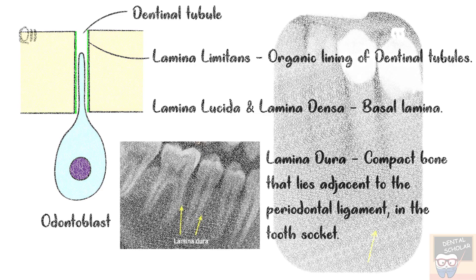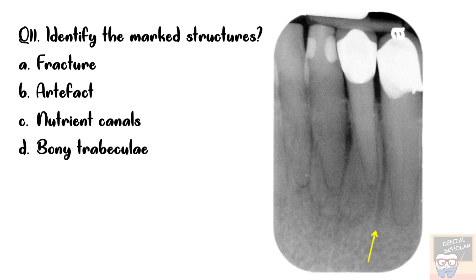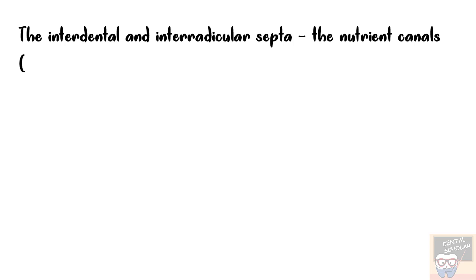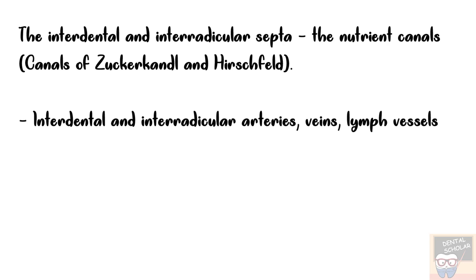Question number 11: Identify the marked structure. Options are fracture, artifact, nutrient canals, and bony trabeculae. The answer is option C, nutrient canals. The interdental and interradicular septa contain these nutrient canals, also called canals of Zuckerkandl and Hirschfeld. The nutrient canals contain interdental and interradicular arteries, veins, lymph vessels, and nerves.